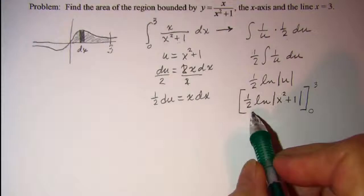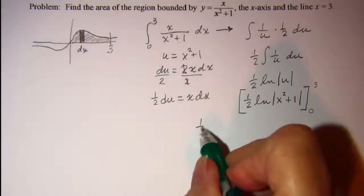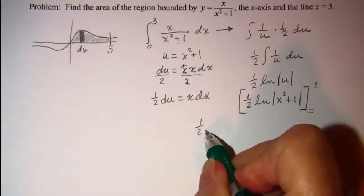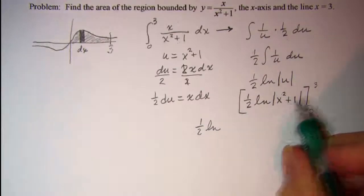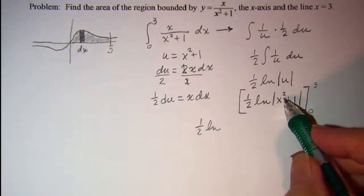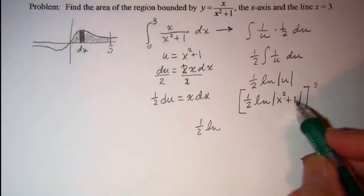Let's go ahead and sub back in. We have 1 half ln and then 3 squared is 9 plus 1 is 10.